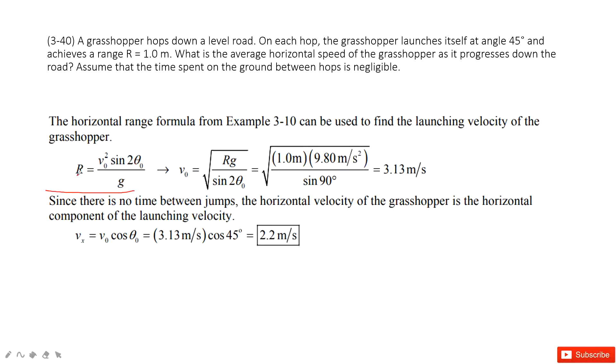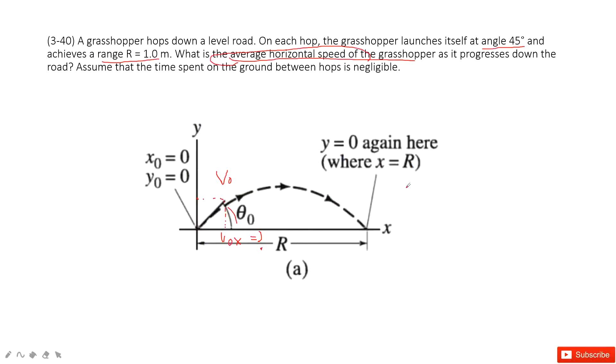the theta is given, the R is given. So very easily, we can get the initial velocity by solving this equation. And we get the initial velocity is this one, 3.13 meters per second.